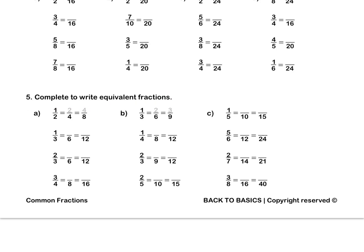Let's look at B. 1 third — we times by 2 at the bottom, so we times by 2 at the top to get 2 sixths. Now, from 6 to 9 there is no number we can multiply by directly, so we look back at the first fraction. From 3 to 9, I times by 3, and 1 times 3 is 3.